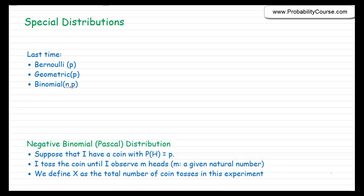Hello. In this video, we continue our discussion on specific discrete random variables. Last time, we talked about Bernoulli, geometric, and binomial distributions. Today, we continue the discussion and talk about negative binomial, hypergeometric, and Poisson distributions.